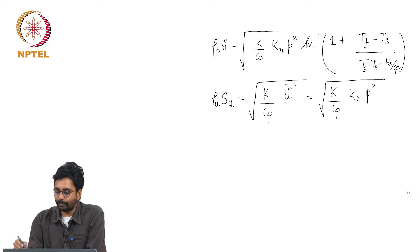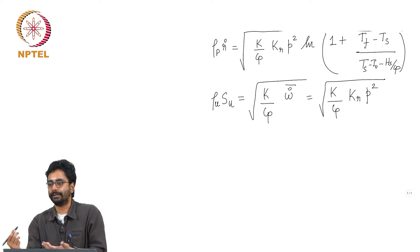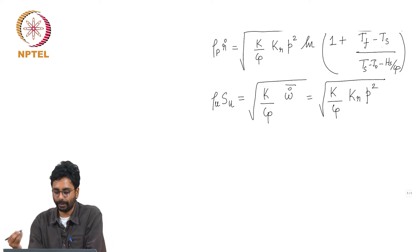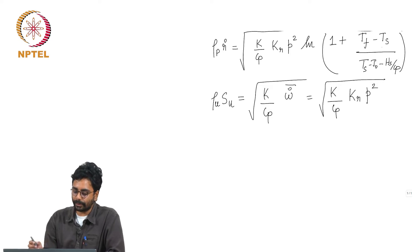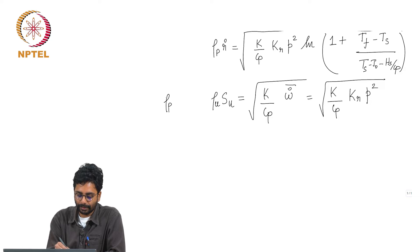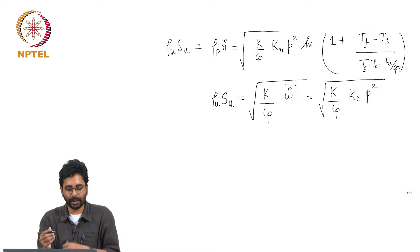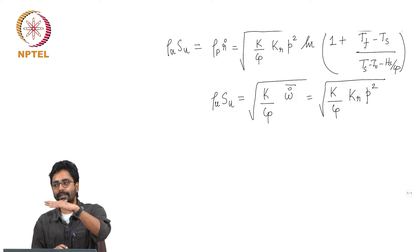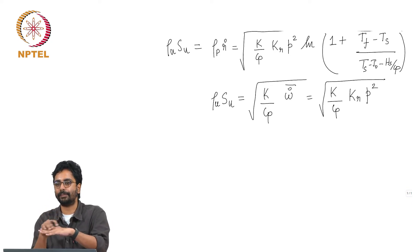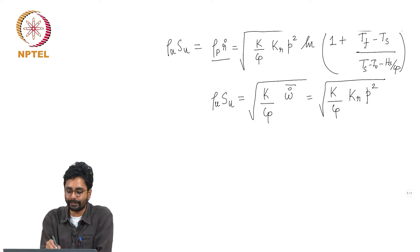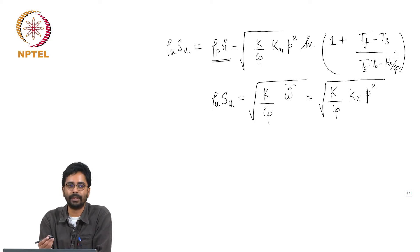The extra term — logarithm of (1 + (T_f - T_s)/(T_s - T_0) - H_s/C_p) — simply comes because of the presence of the condensed phase into which a part of the heat is going. Since the solid surface is regressing at a certain rate and giving off gases, there is mass balance at the interface, so the mass of the propellant getting converted from solid to gaseous phase should equal the mass flux in the gas phase.